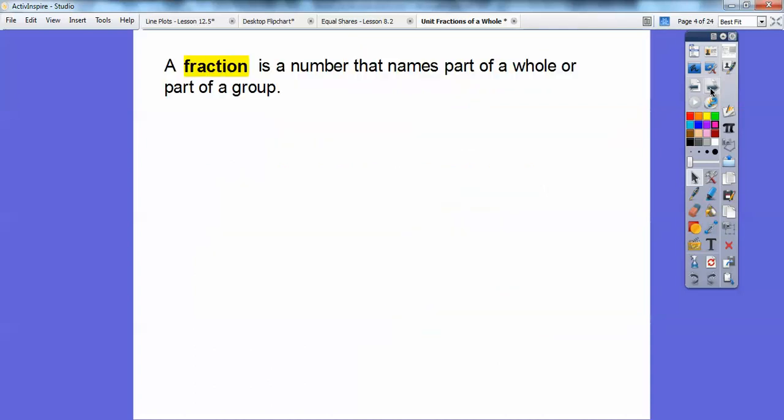Alright, so a fraction is just a number that names parts of a whole, or part of a group. Here we have a fraction, 1/5, and that's how you say that: 1 fifth. So, 1 over 5 is 1 fifth.